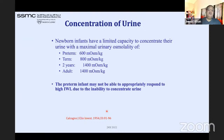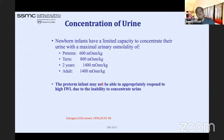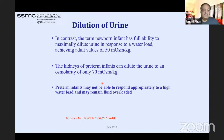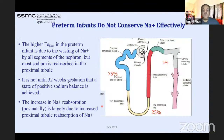Newborn infants have limited capacity to concentrate urine. Preterm urine osmolality is only about 600 mOsm/kg compared to 1400 mOsm/kg in adults. Conversely, if given too much fluid, even full-term newborns cannot dilute urine adequately, which is why edema occurs. The term newborn can dilute down to about 50 mOsm/kg of the adult value, and the preterm kidney can only achieve about 70 mOsm/kg.